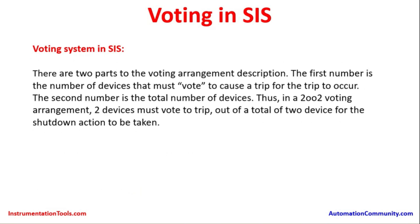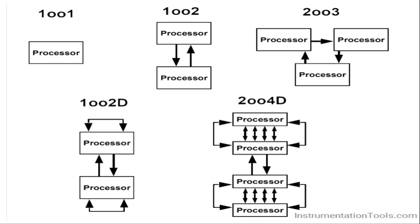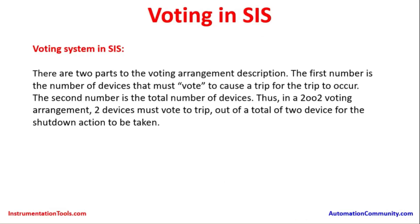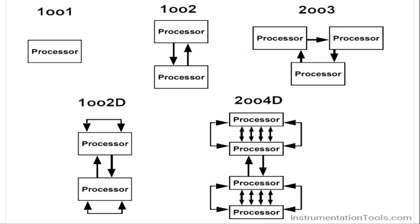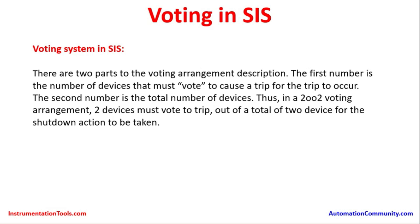In the voting system in SIS, there are two parts to the voting arrangement description. When we say 1 out of 1, 1 out of 2, or 2 out of 2, we need to understand what the first number and second number mean. The first number is the number of devices that must vote to cause a trip for the trip to occur. For example, 1 out of 2 means 1 instrument failure out of 2 instruments is required to trigger a trip.